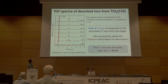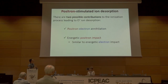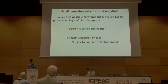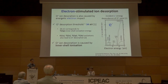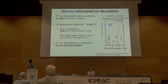The O+ peak is also present at energies below 34 eV, which is the threshold energy for electron-stimulated desorption. There are two possible contributions to the O+ ion desorption: energetic positron impact ionization, similar to electron impact, and positron-electron annihilation. Looking at past electron-stimulated ion desorption measurements, the O+ ion desorption threshold is 34 eV, corresponding to Ti 3p inner-shell ionization energy. O+ desorption can also be induced by ionization of the O 1s, Ti 2s, Ti 2p, and Ti 3s shells.